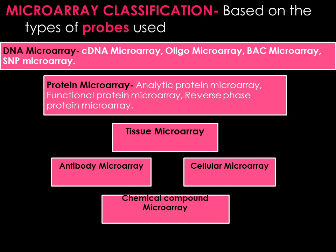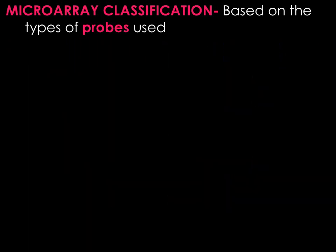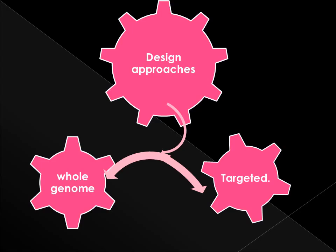Other than DNA microarrays, there are protein microarrays, peptide microarrays, tissue microarrays, cellular microarrays, antibody microarrays, carbohydrate microarrays, etc., according to the probe used for detection. There are two approaches to designing microarrays: whole genome, which is designed to cover the entire human genome, and targeted, where arrays are designed for a specific region of the genome for the purpose of evaluating that targeted segment.